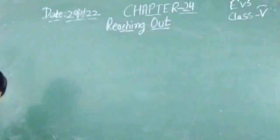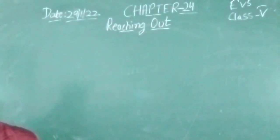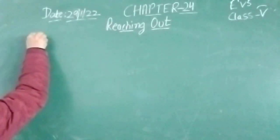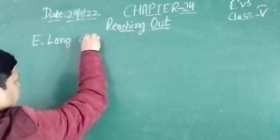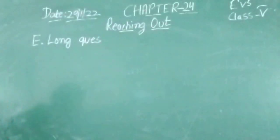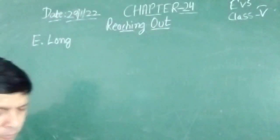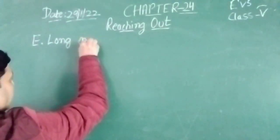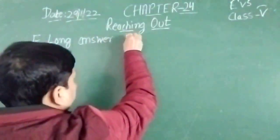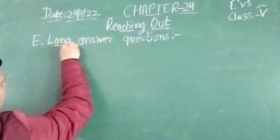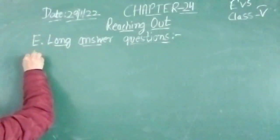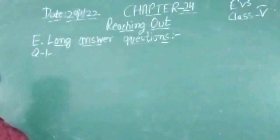Now we will start the long question answers. That is question number E. Long answer question. You note down the question from the book. What is the question? How is a satellite useful to us?